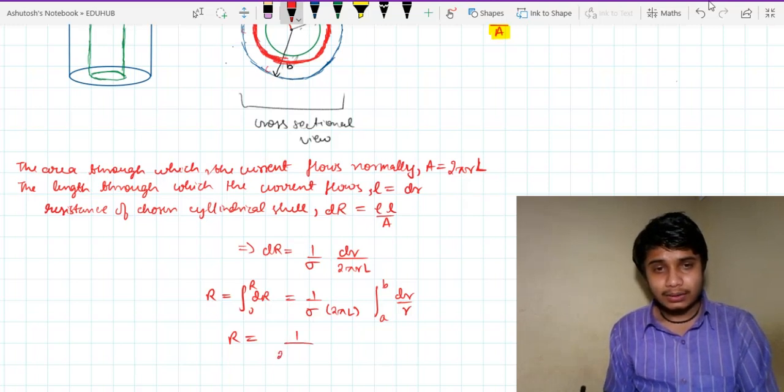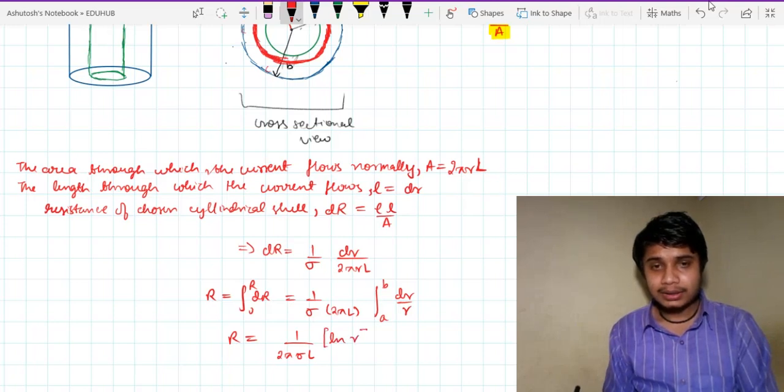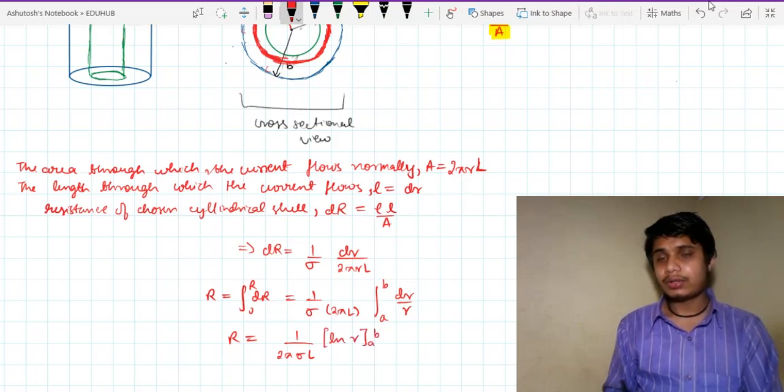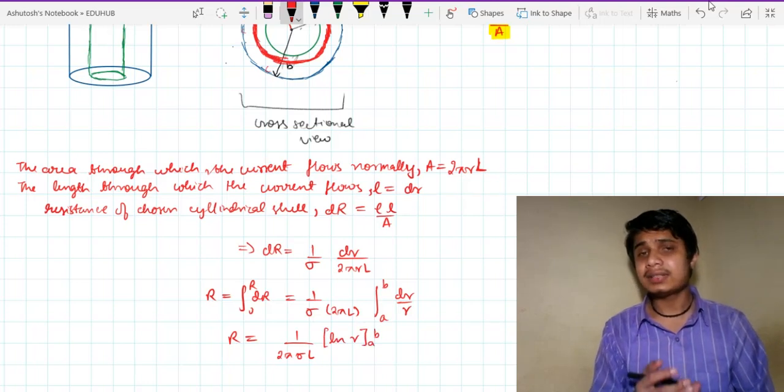So 1 over 2 pi sigma L, ln of r under the limits a to b. What is integration dx over x? It is ln of x.